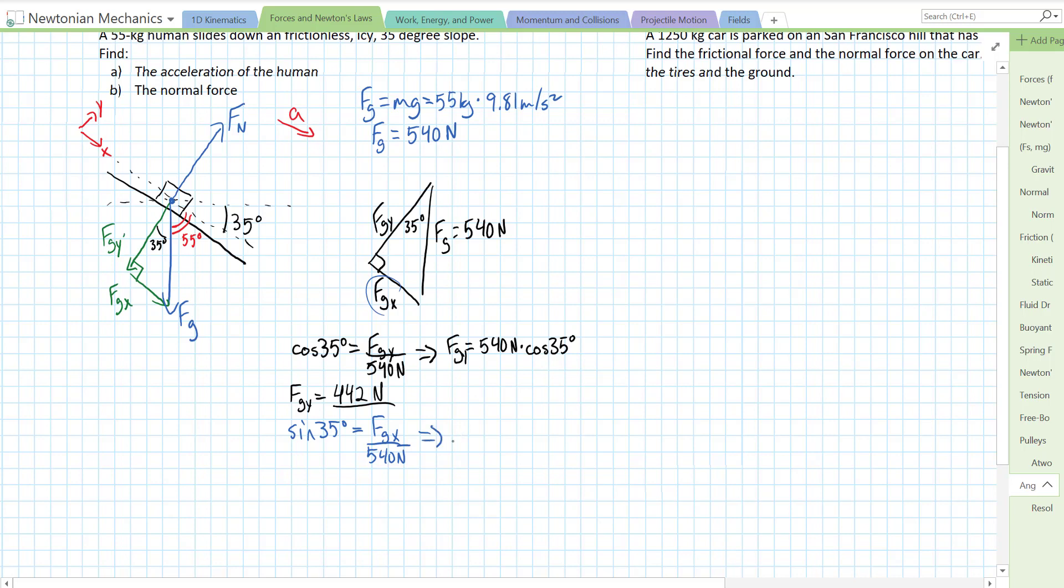Then, that becomes fgx equals 540 sin of 35 degrees. We end up with fgx equals 540 sin of 35. 309.7. So, I'm going to write it as 309. We'll round later. 309 newtons. Actually, that's going to be 310 newtons.